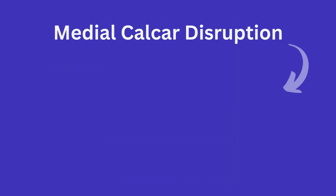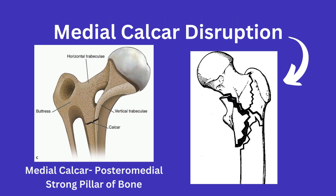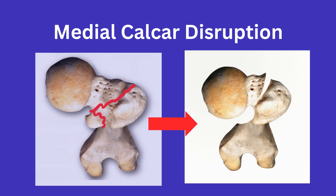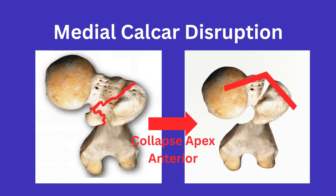For medial calcar disruption, you have to understand what the medial calcar is. The medial calcar is a strong posterior medial pillar of bone. Without it, you can imagine that with compression you will be essentially missing this structure and will collapse apex anterior.